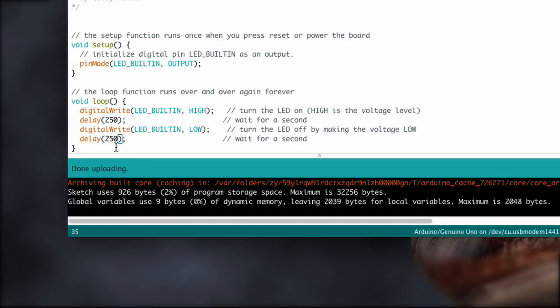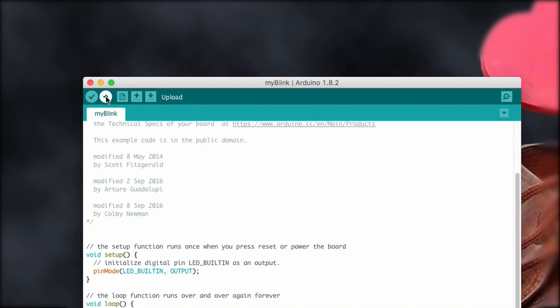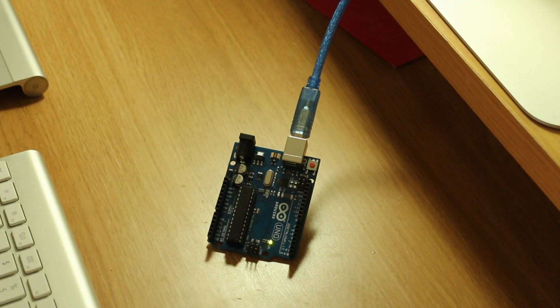So let's change, we'll change the delay to 1250 and upload that. So it flashes on then it waits for one and a quarter seconds and flashes again. So there you go. That is your first Arduino sketch. Brilliant, eh?